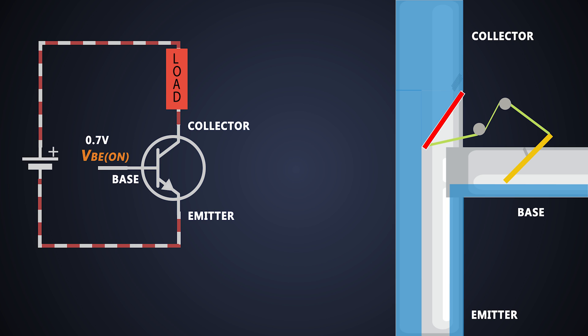Let's see an NPN transistor BC547. This is the collector, emitter, and base.